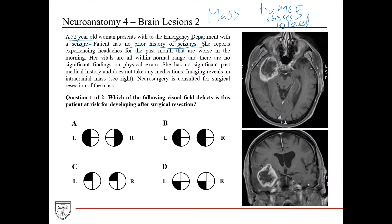With seizures, you also want to be thinking about the temporal lobe. Masses impinging on the temporal lobe can typically cause seizures if they become large enough and compress it sufficiently. She reports experiencing headaches for the past month that are worse in the morning, which are very commonly seen with intracranial masses, and she's been having them for a significant period of time.